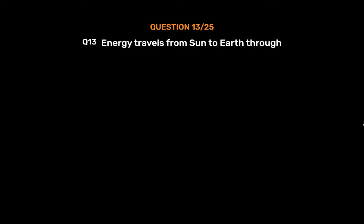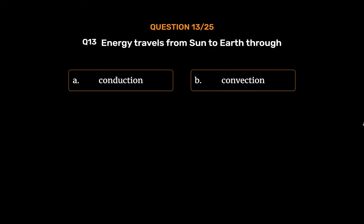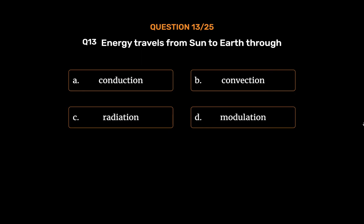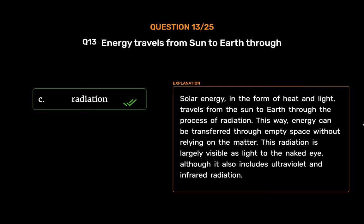Question No. 13. Energy travels from sun to earth through. Option A: Conduction. Option B: Convection. Option C: Radiation. Option D: Modulation. The correct answer is Option C: Radiation. Solar energy, in the form of heat and light, travels from the sun to earth through the process of radiation. This way, energy can be transferred through empty space without relying on matter. This radiation is largely visible as light to the naked eye, although it also includes ultraviolet and infrared radiation.